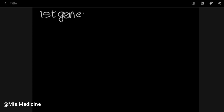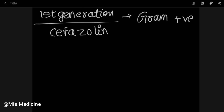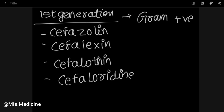Cephalosporins are divided into five generations. We will discuss all generations in this video. First generation acts on or is effective against gram-positive bacteria. It includes drugs like Cefazolin, Cephalexin, Cephalothin, Cephaloridine, and Cephadroxil. All these drugs are effective against gram-positive bacteria.